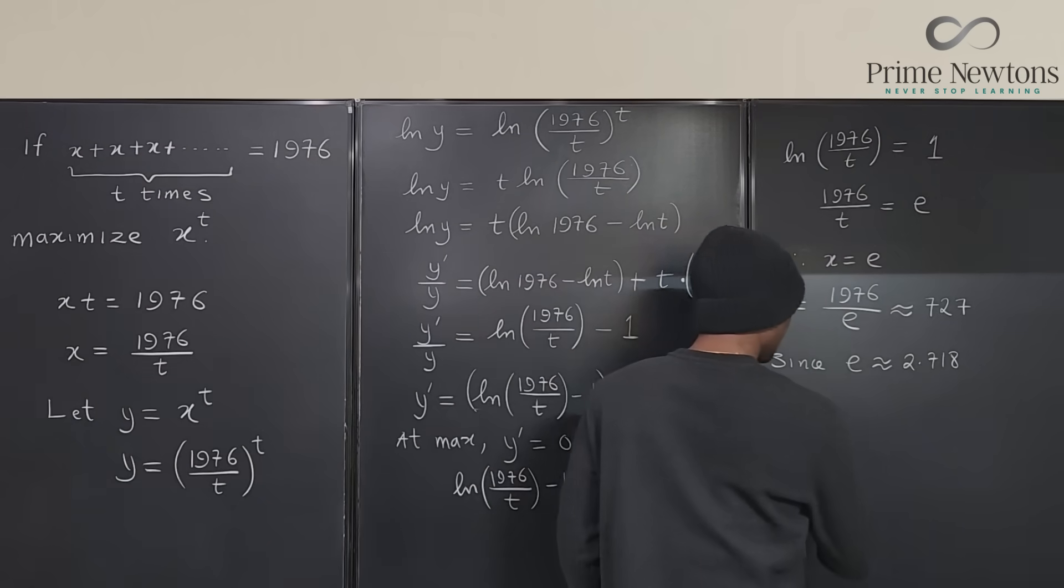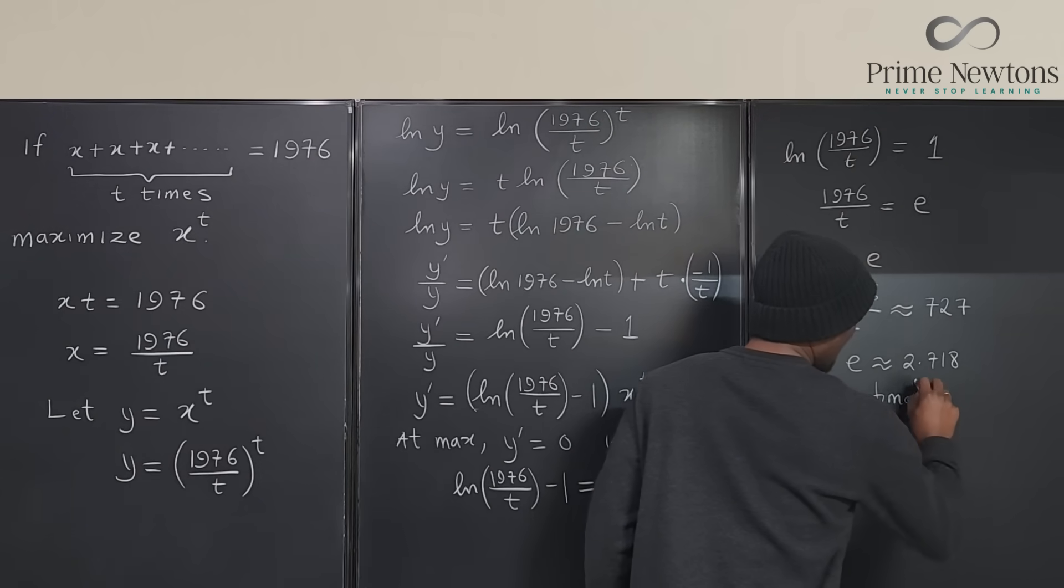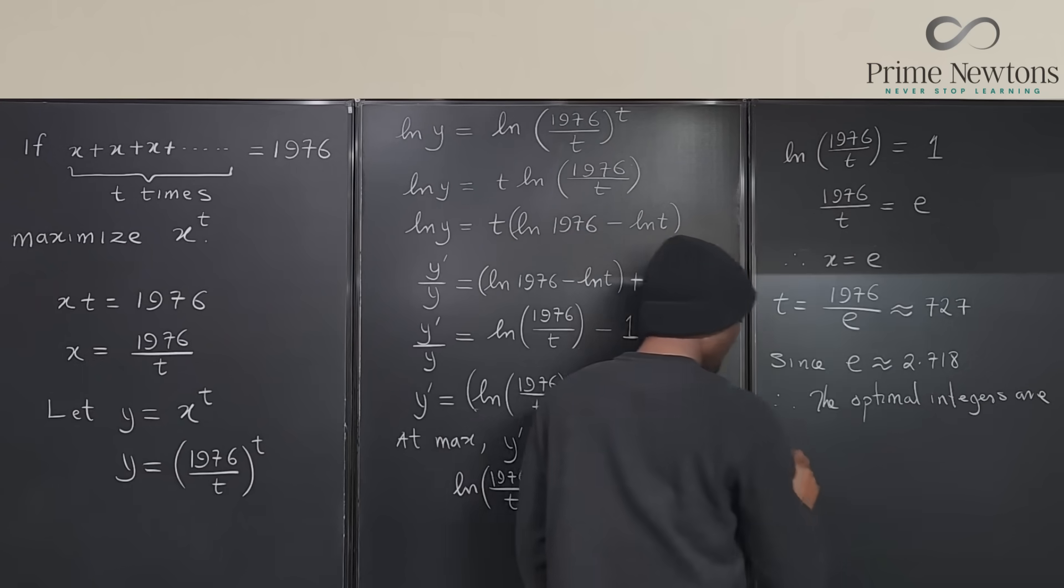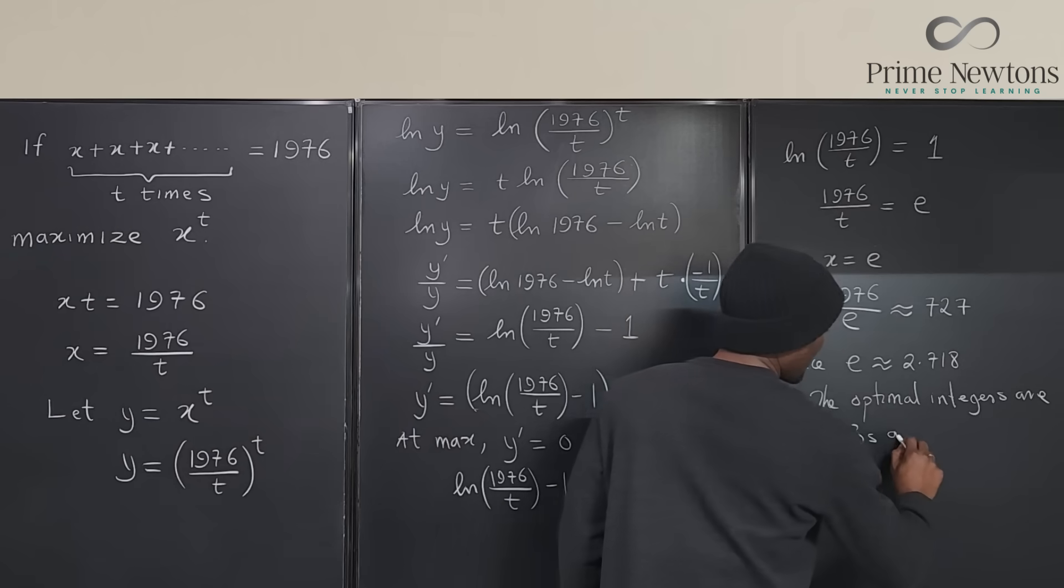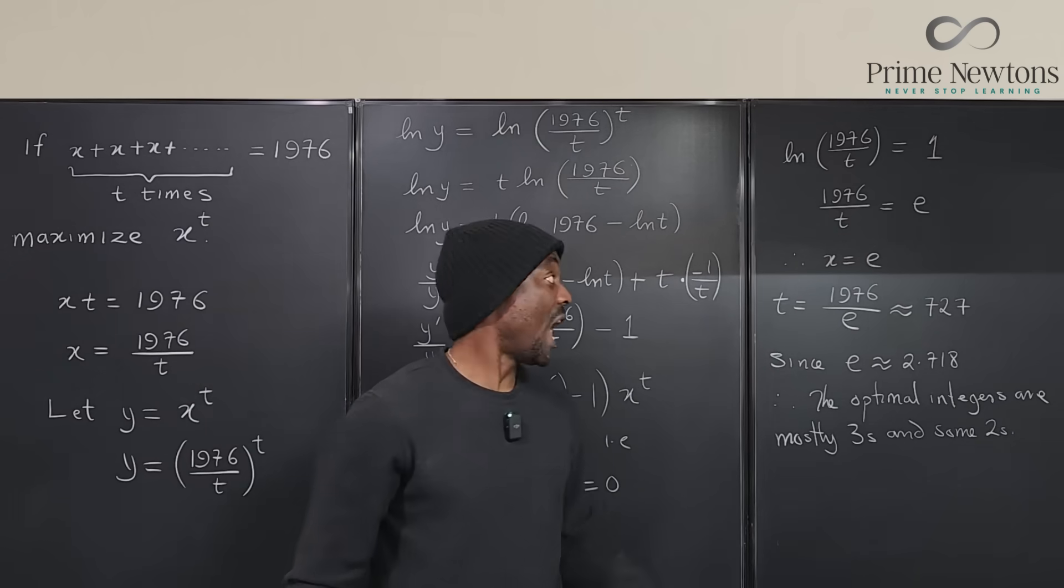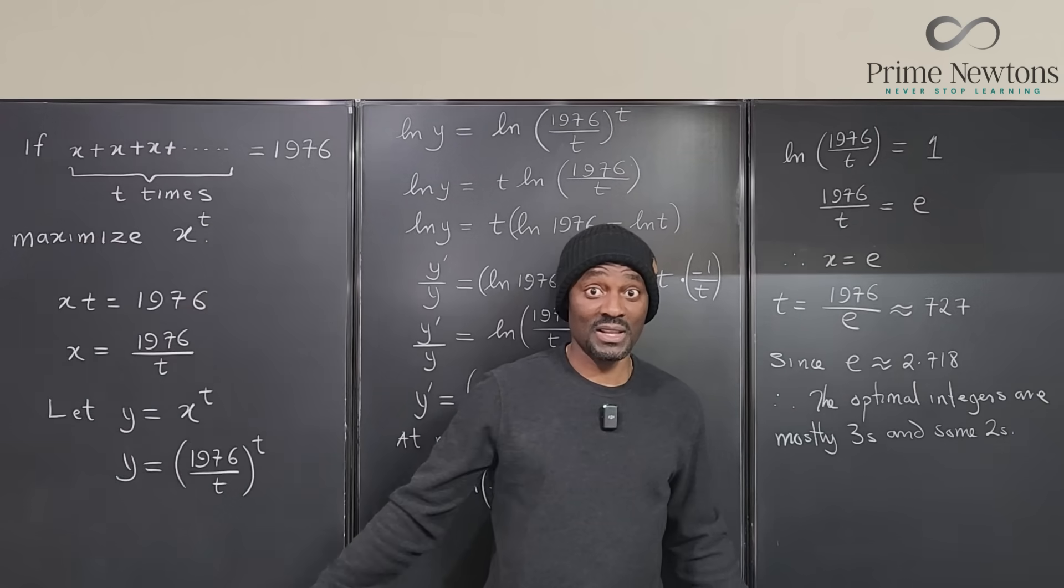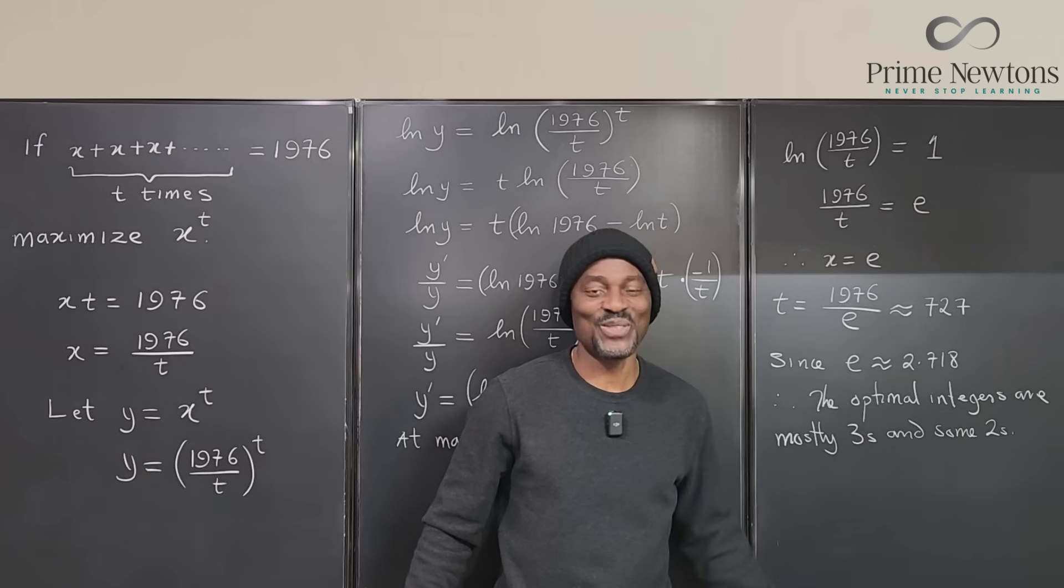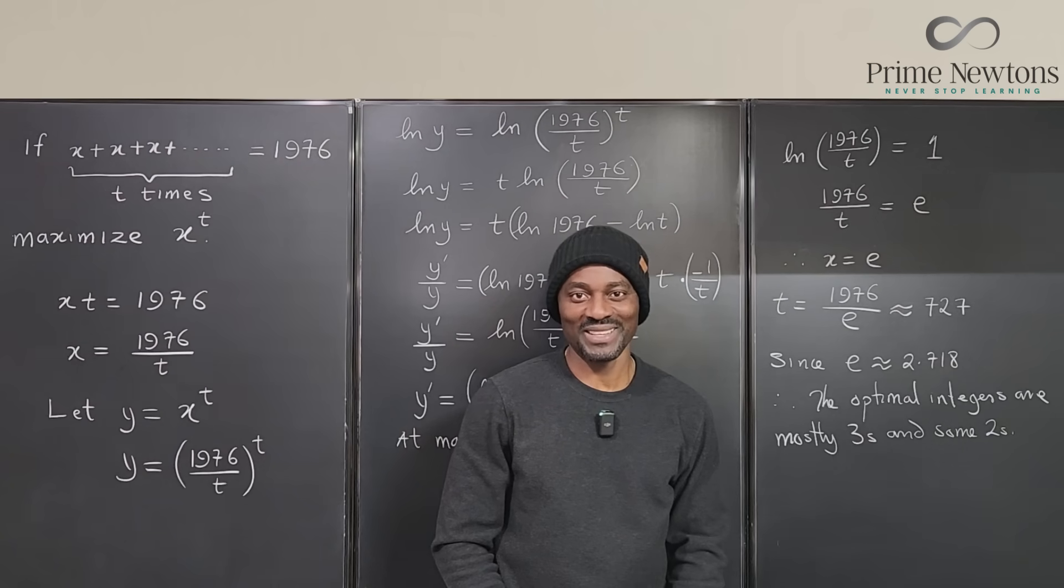So therefore the optimal integers are mostly threes and some twos. That's how it should be. I hope this clarifies my claim, but this is calculus, not number theory. Never stop learning. Those who stop learning stop living. Bye bye.